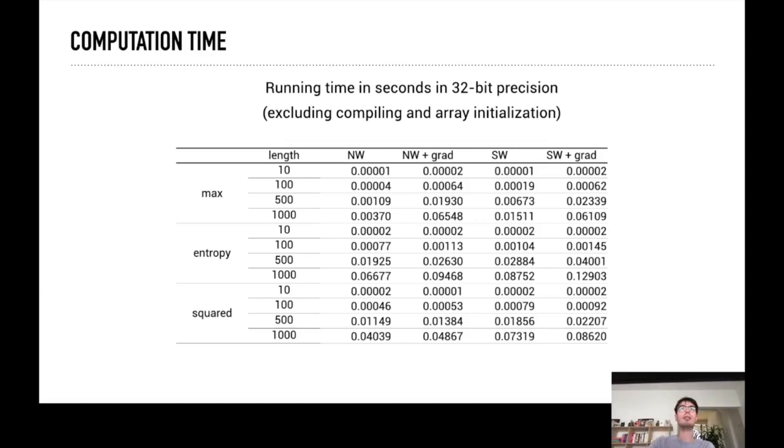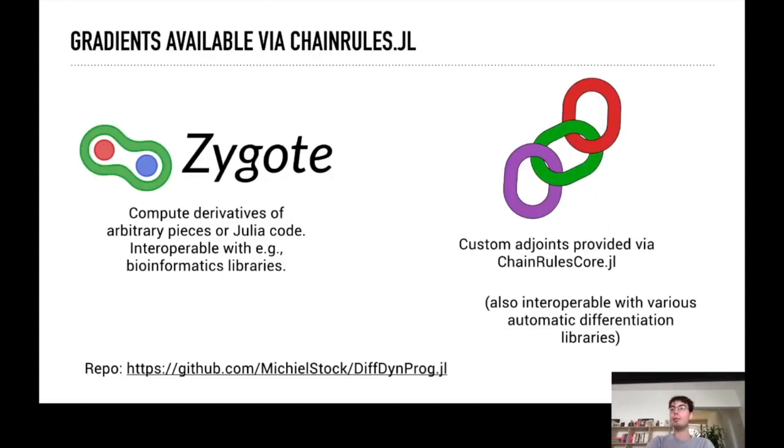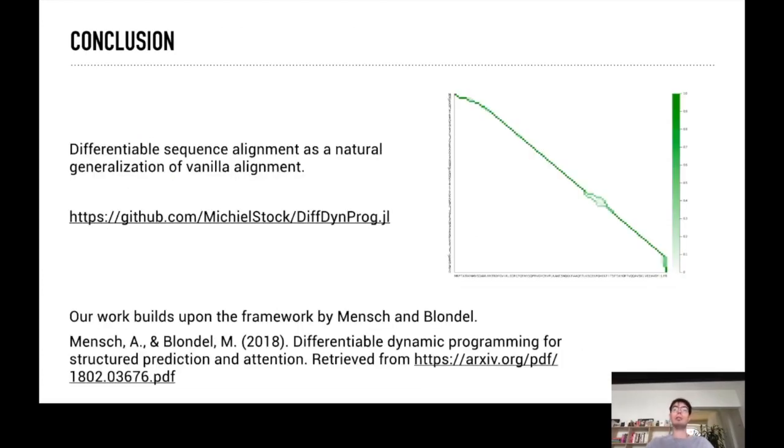We use the chain rule to provide our adjoints so these work together with other automatic differentiation packages including Zygote, and these gradients are directly accessible for libraries such as for example Flux. So this was our framework, what we did is just have these traditional bioinformatic sequence alignment algorithms and we have looked at them through the lens of differentiable programming.